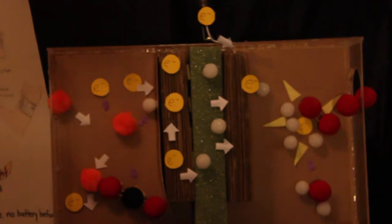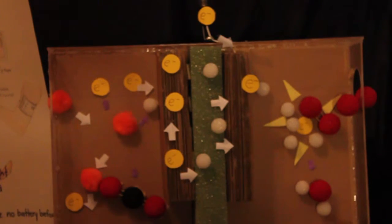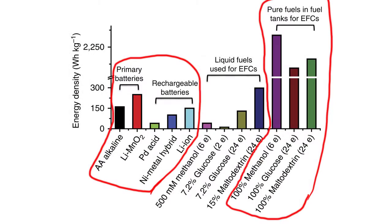Our biobatteries imitate the natural catabolic pathways of living cells, replacing rare and toxic metals with enzymes as catalysts to metabolize sugars. Sugars contain energy density significantly greater than both traditional batteries and fuel cells.